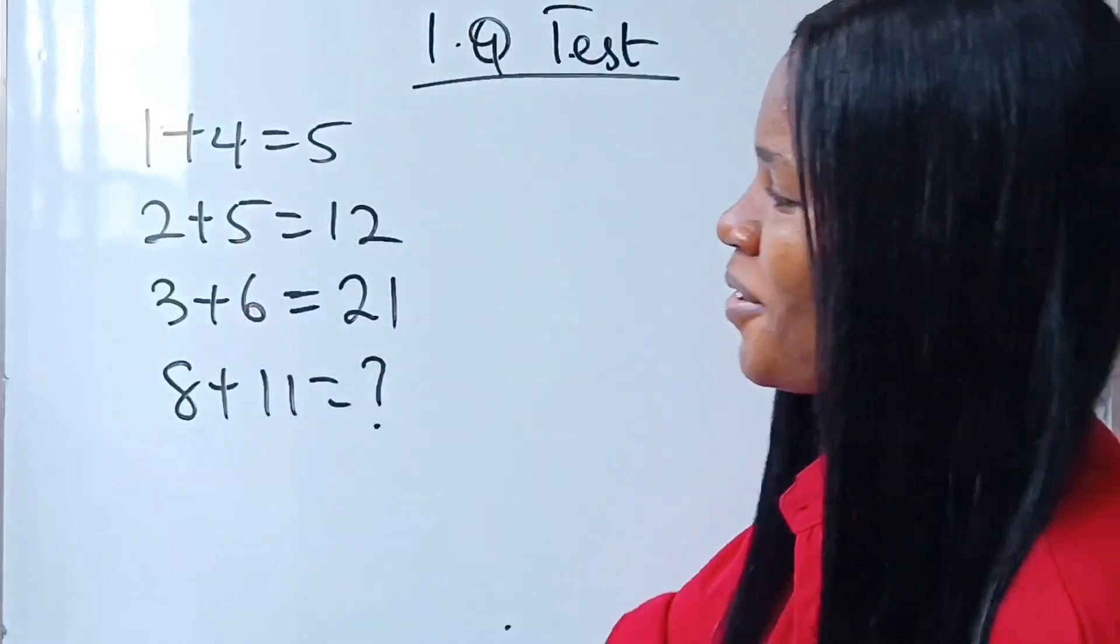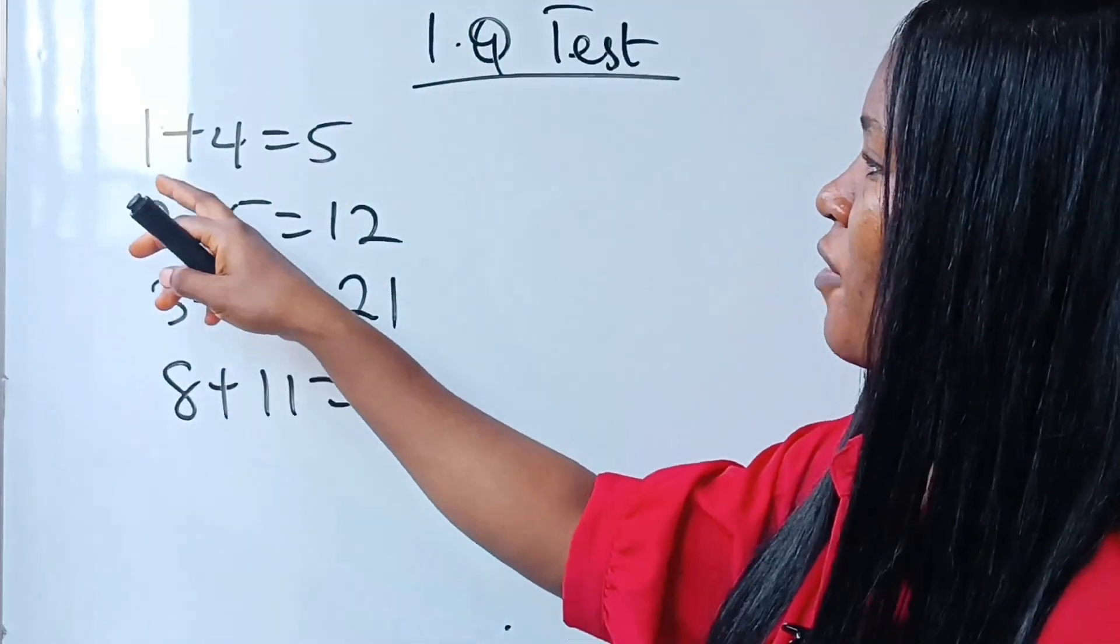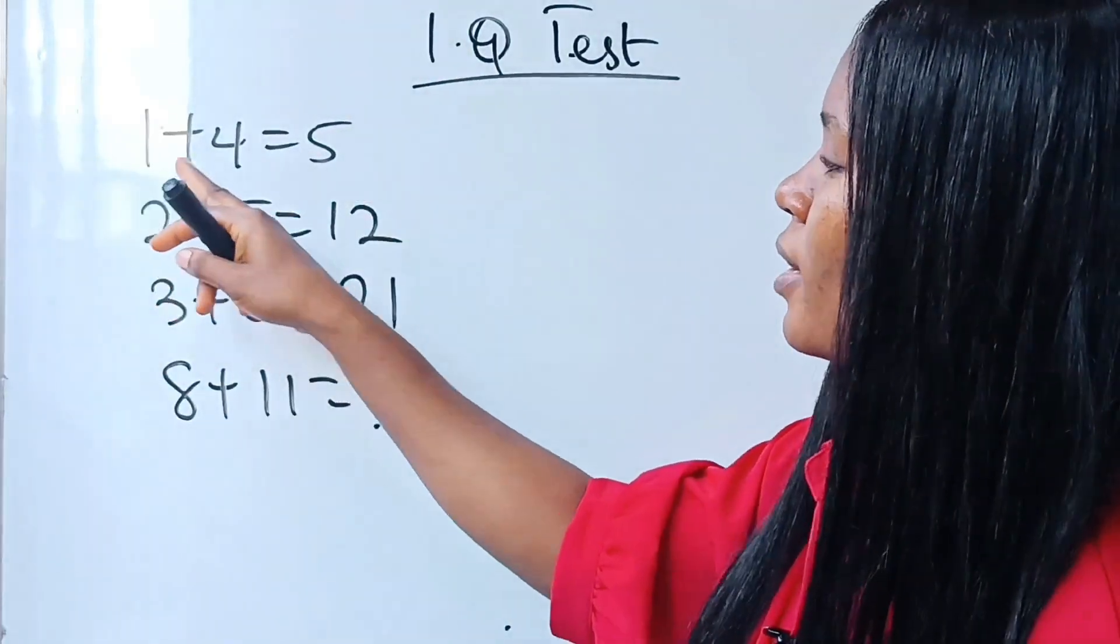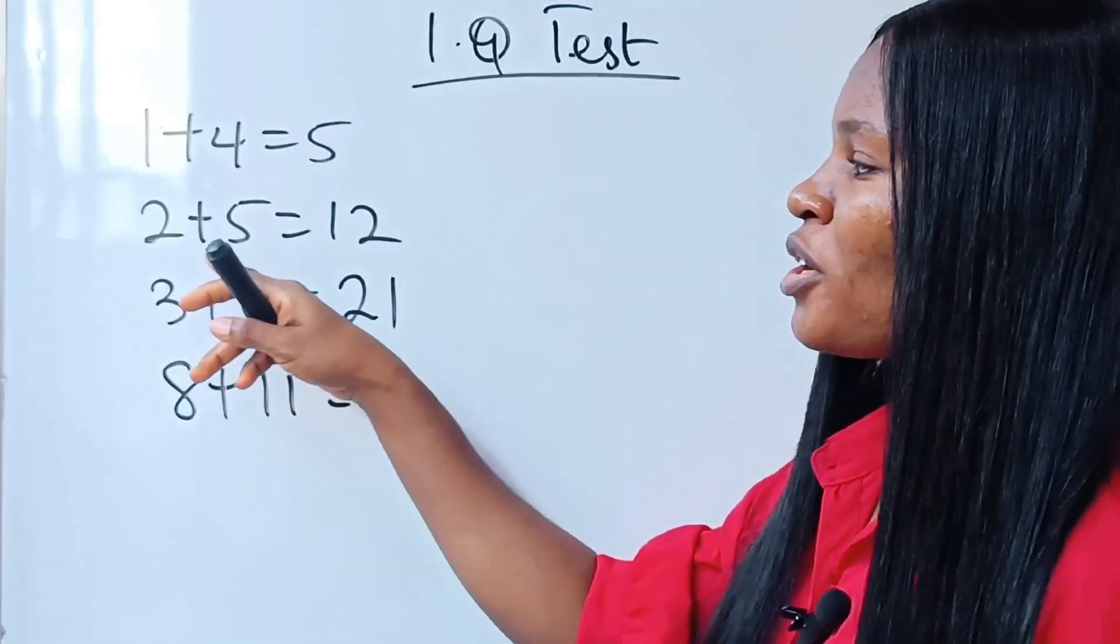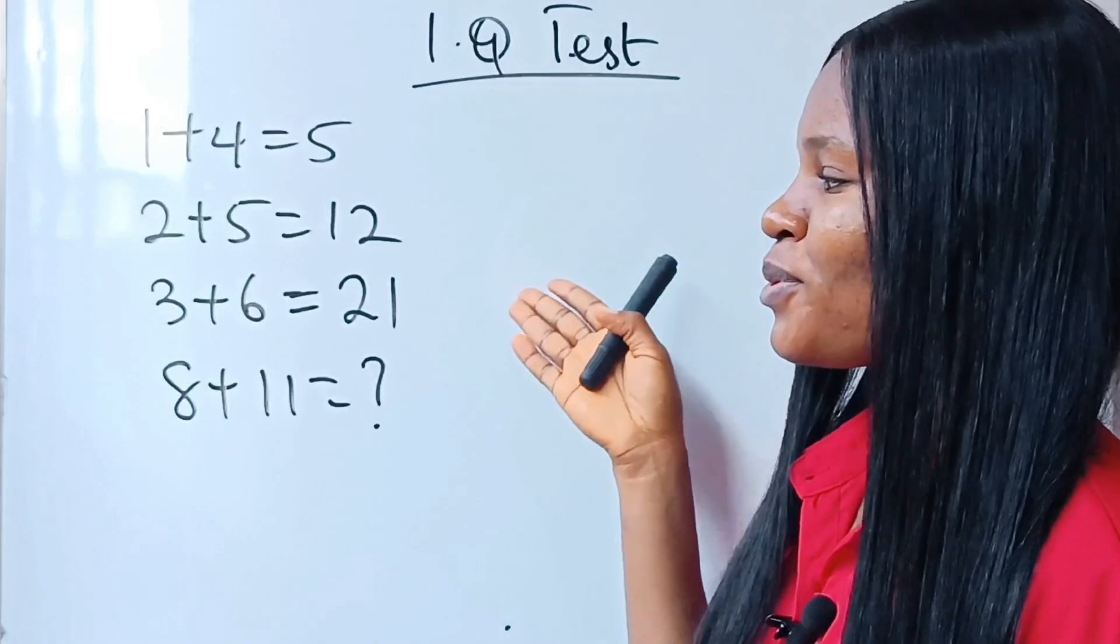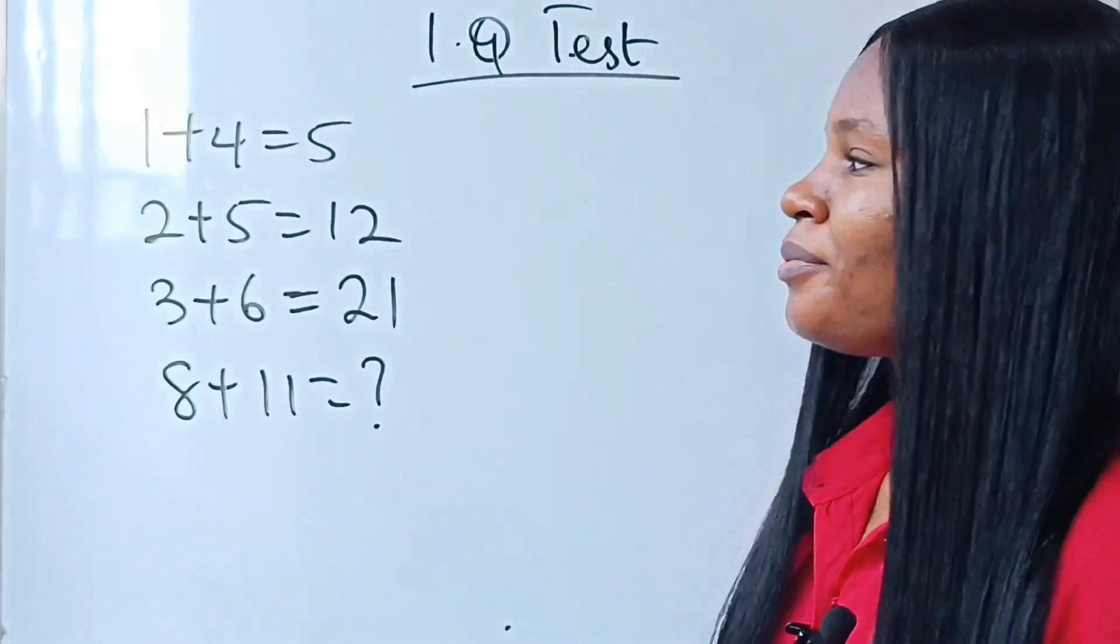Today we have an IQ test on the board. The first equation says that 1 plus 4 is equal to 5. Yes, which is true, right? And how is 2 plus 5 equal to 12 and then the rest?